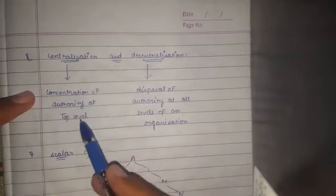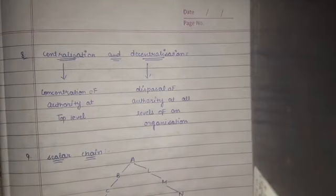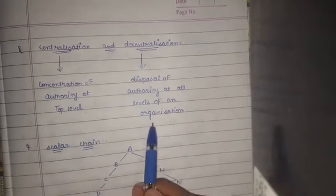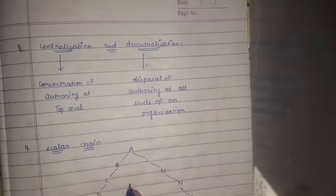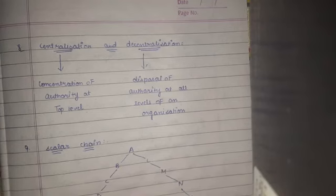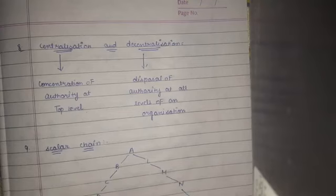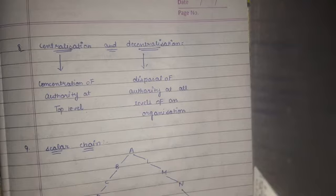The eighth principle is Centralization and Decentralization. Centralization means concentration of authority at the top level only. Decentralization means authority is distributed across top, middle, and lower levels. The choice between centralization and decentralization depends on the size of the business. A small shop with three or four workers will have centralization. In larger organizations, top-level management focuses on key objectives, while routine decisions like employee leave can be decentralized to lower levels.